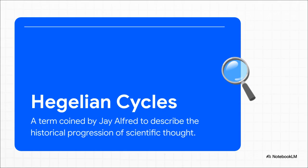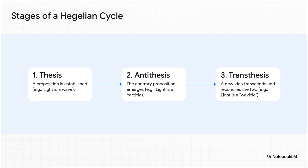The idea is that because our brains are wired to think in these opposing pairs, scientific knowledge itself is forced to move forward in this predictable, cyclical pattern. It's like a three-act play. First, you get a thesis. A big scientific idea gets established. For example, light is a wave. It's the dominant theory.